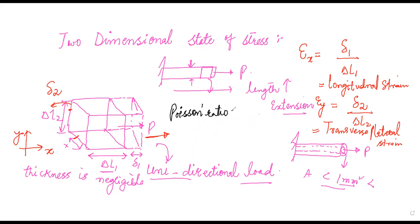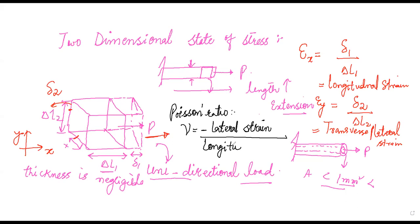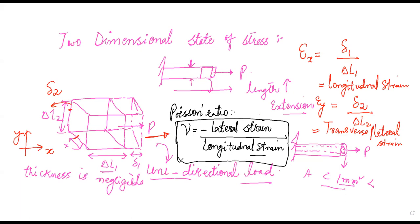We have a very important property of the material which we call Poisson's ratio. We define a quantity called Poisson's ratio, represented by the symbol nu. Poisson's ratio is defined as the negative of the lateral strain divided by the longitudinal strain — that is, negative of lateral strain over longitudinal strain.